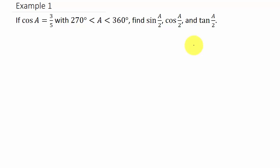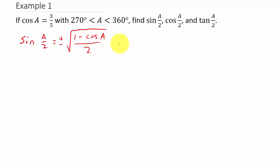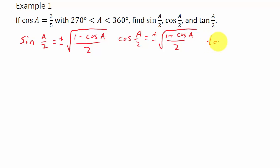The first thing we want to do is write our formulas down. Sine of a/2 is equal to plus or minus the square root of (1 minus cosine a) over 2, and cosine of a/2 similarly. For tangent, let's write down: tangent of a/2 equals (1 minus cosine a) over sine a. For the sine and cosine formulas, I need cosine a — and they give us cosine a as 3/5, so I just plug that in.